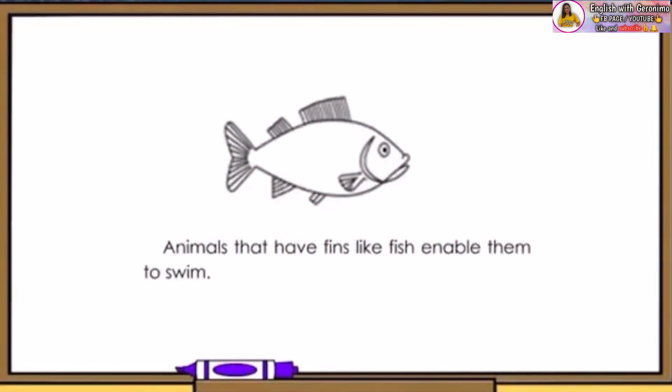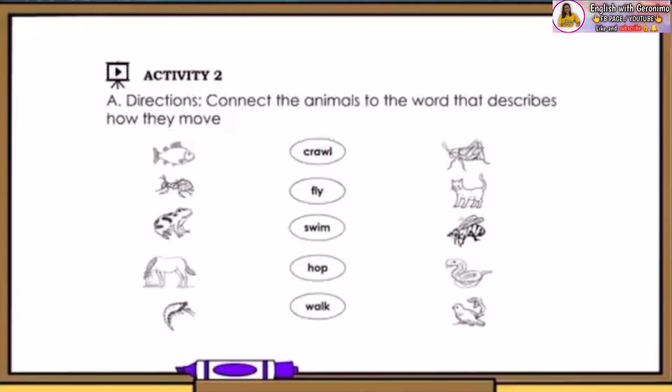Not all animals have legs to walk and wings to fly. Let us look at this. These are fishes. Fishes live in water. Do you know how they move? They swim. They use their fins to swim. I hope you remembered our lesson well because we will have an activity.